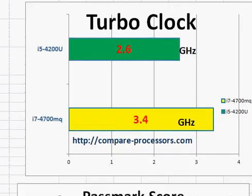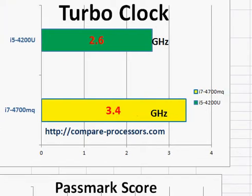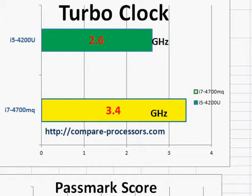Looking at the turbo clock frequency, the 4200U still catches up a little bit in turbo clock. The turbo clock increases the clock frequency for a small amount of time as required. We cannot sustain it for a long period of time because when it raises the clock frequency, the processor heats up much faster, beyond its specification. To reduce thermal heating, it has to reduce its clock frequency. So the 4200U is still catching up to the 4700MQ, and if your requirement does not need a very great amount of processing power, then the 4200U may still be good enough.